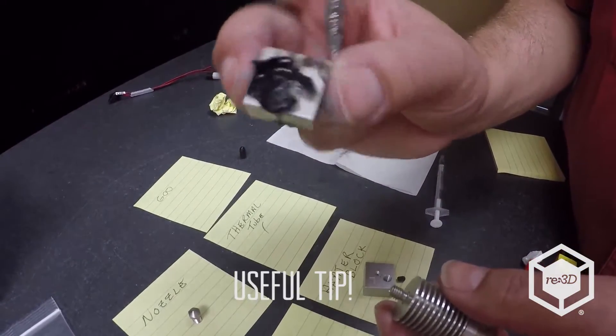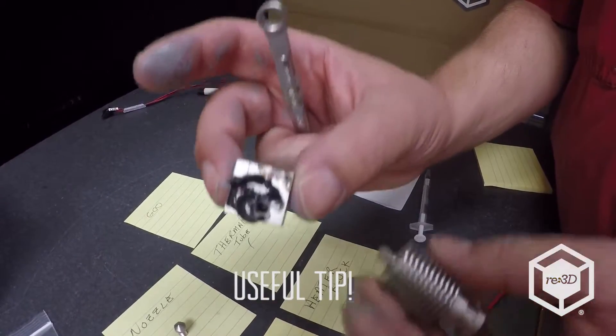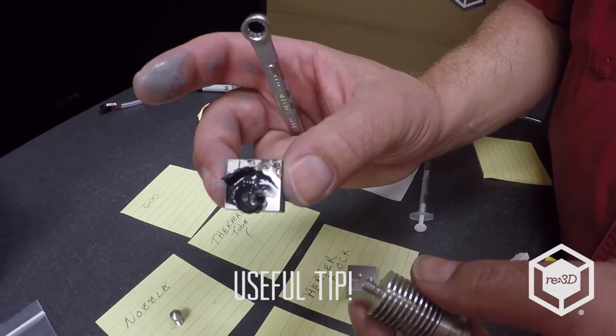A good trick to taking this apart when it's gooed like this is to heat it up. Because the plastic will make everything stick together. But heat it up to temp and it should come right apart for you.